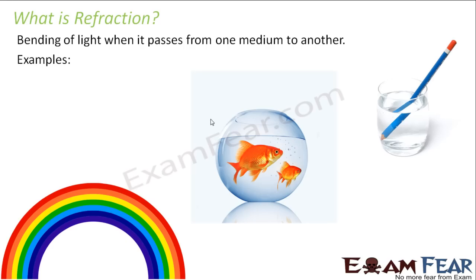There are several examples around us where we see refraction. The first picture depicts a pencil dipped in a glass of water. You can try it on your own — take a glass of water, put a pencil inside. You will see that the pencil appears a little bent. The pencil is not bent at all; it is straight. But due to refraction, light rays enter from one medium — air — to another medium — water — and so the light rays bend.